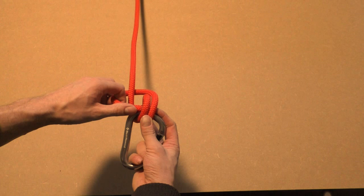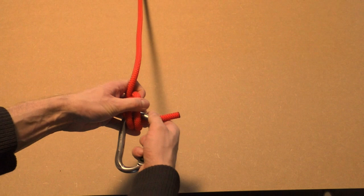Leave the working end behind the standing part. Then feed the working end through the two coils and hold the working end. Pull the standing end of the rope to tighten the knot seen in video.